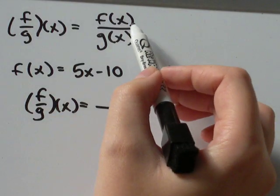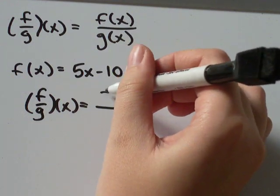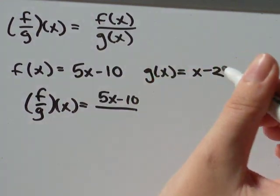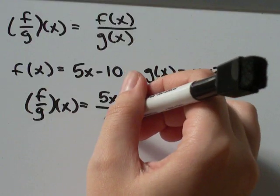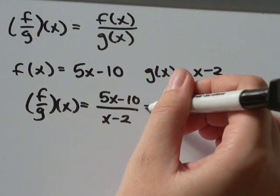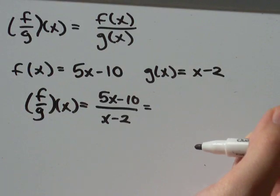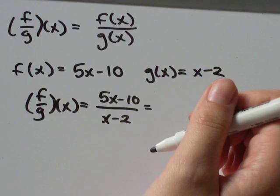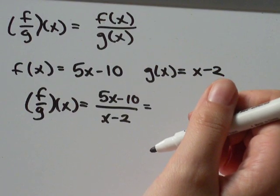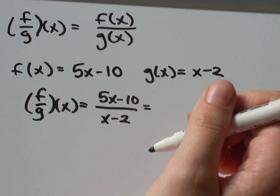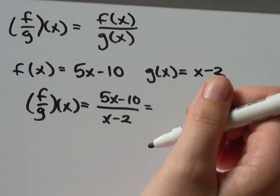So I'm going to do f of x, which is 5x minus 10, divided by g of x, which is x minus 2. So the first thing I think I'm going to do, you could leave your answer like that, it's not wrong, it's just not simplified. So we're going to simplify it, just because, you know, you guys should too.